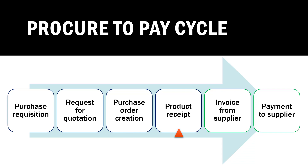In Dynamics 365 FNO, this confirmation is called a product receipt — you will also hear people refer to it as a goods receipt. After the product receipt is acknowledged, the supplier — the vendor — sends an invoice to the organization. This is where the finance team gets involved. They update the invoice in the system, and based on the payment terms, for example paying within 30 days, the organization pays the invoice to the supplier.